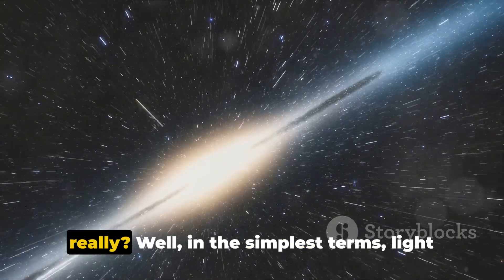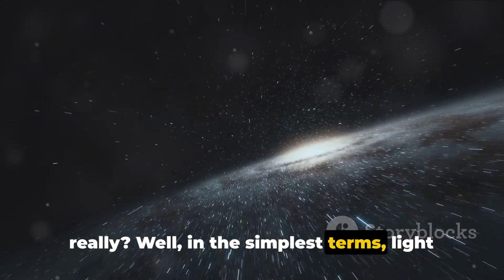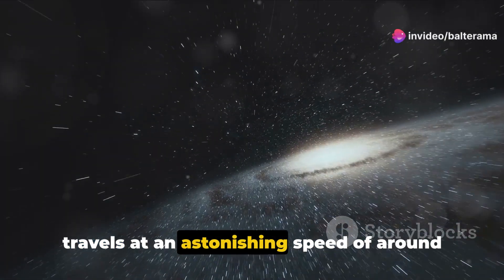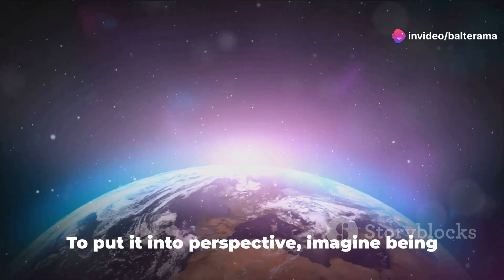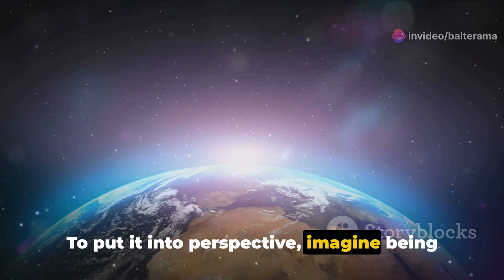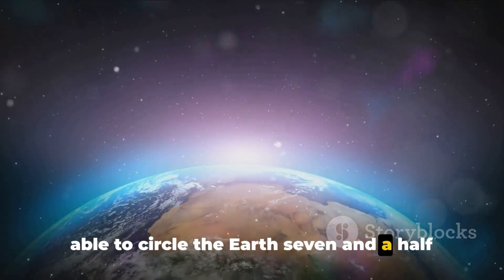So how fast is the speed of light really? Well, in the simplest terms, light travels at an astonishing speed of around 186,000 miles per second. To put it into perspective, imagine being able to circle the Earth seven and a half times in a single second.